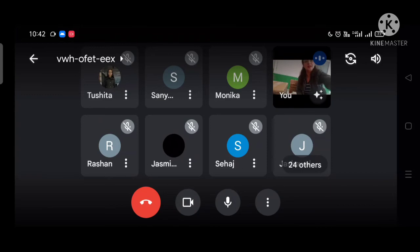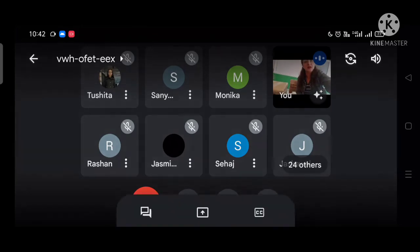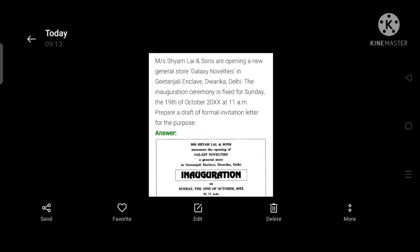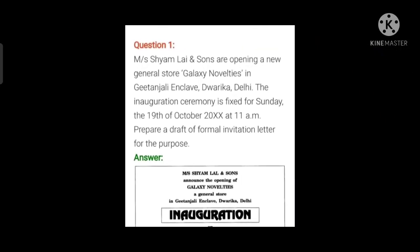I will just show you some samples so things will become more clear, and then I will be sharing an assignment with you. Here is the first example: Messrs. Shyam Lal & Sons are opening a new general store, Galaxy Novelties, in Gitanjali Enclave, Dwarka, Delhi. The inauguration ceremony is fixed for Sunday the 19th of October 20— at 11 a.m. Prepare a draft of formal invitation.